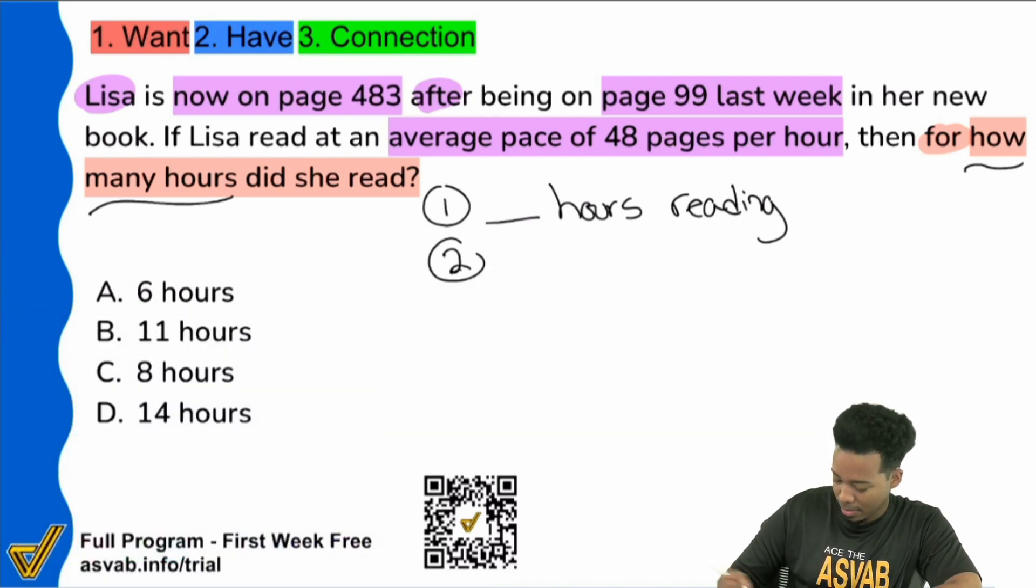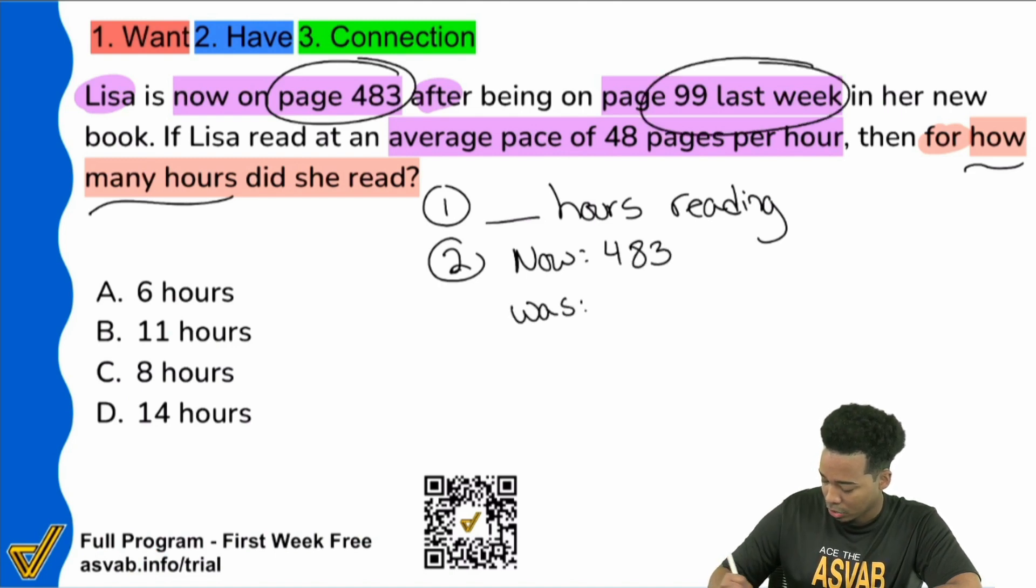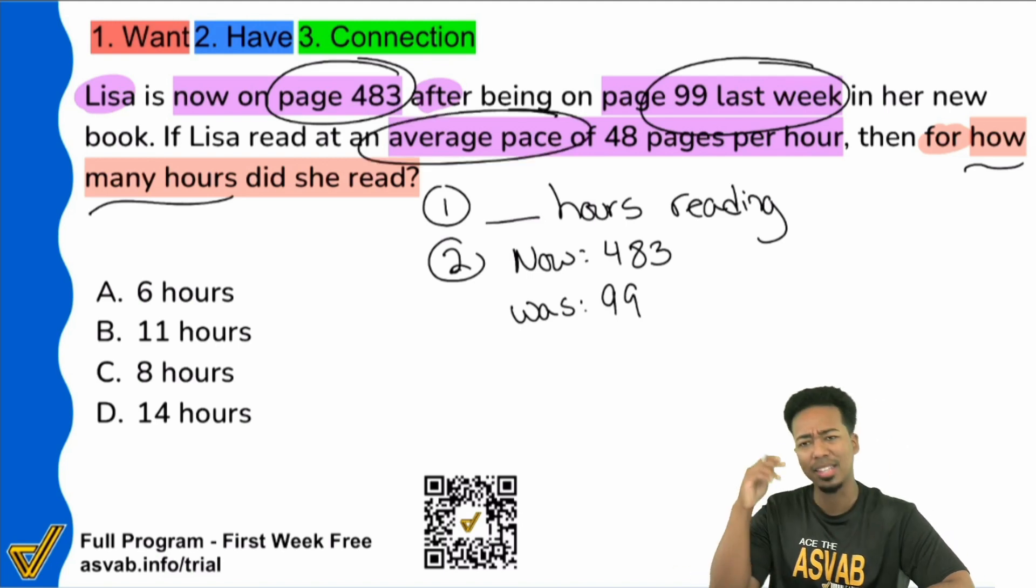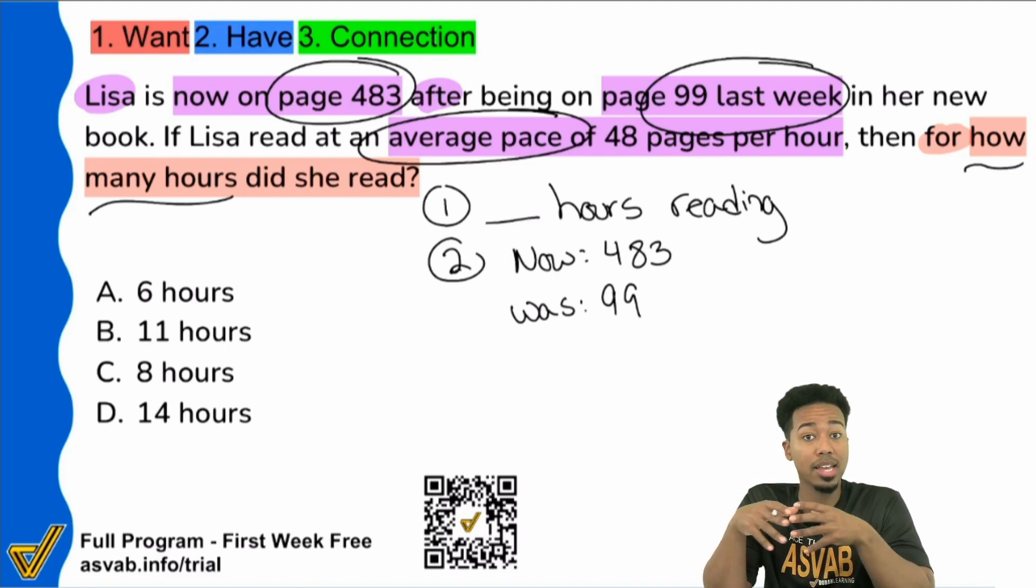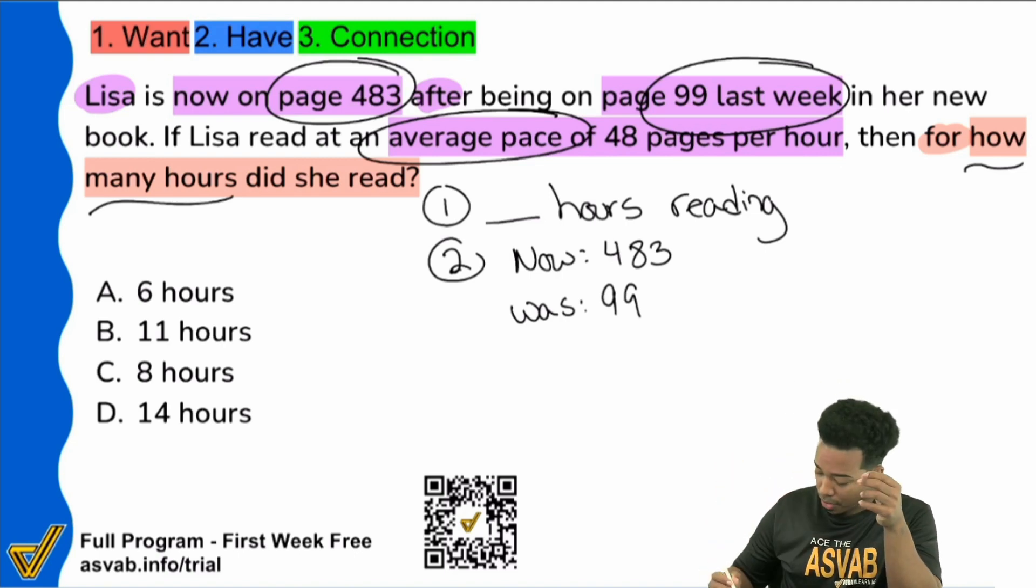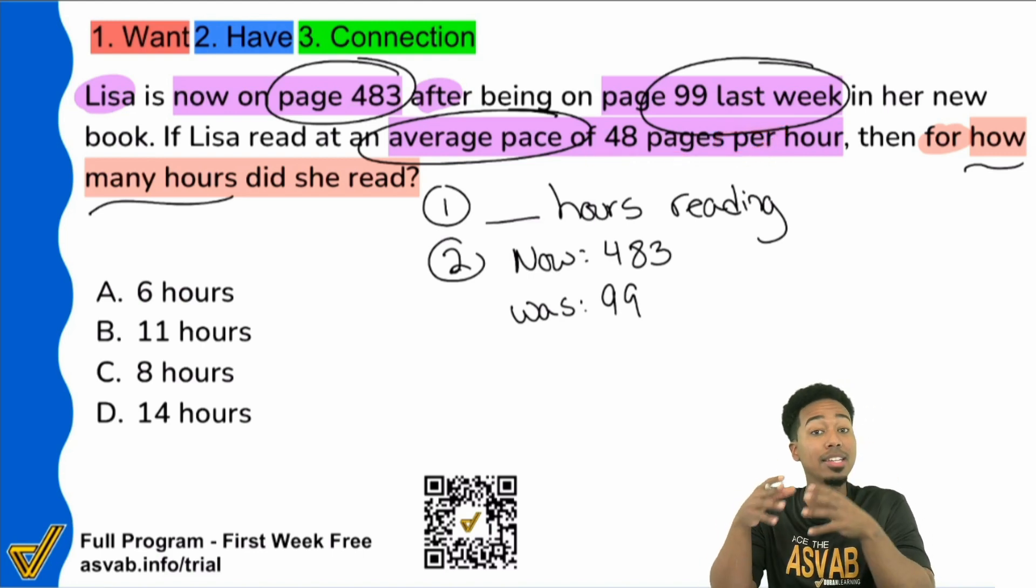Let's write this information down. Number one, now on page 483. So now page 483. Lisa was on page 99 last week. And then you see that it says an average pace. Now what does that mean? Average pace, that is a rate because you see the phrase 48 pages per hour. That is a rate given to you.